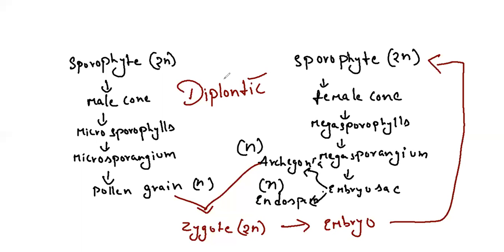Antheridium is absent in gymnosperms and angiosperms. Antheridium is seen only in bryophyta and pteridophyta. Archegonium is seen in bryophyta, pteridophyta, and gymnosperms. During evolution, the gametophyte becomes reduced while the sporophyte is well developed. In bryophytes, the sporophyte is dependent on the gametophyte. In pteridophytes, sporophyte and gametophyte have separate lives. In gymnosperms and angiosperms, the gametophyte is very much reduced and entirely dependent on the sporophyte.